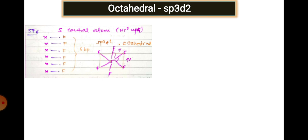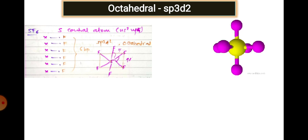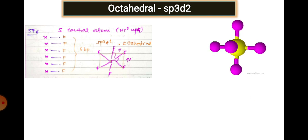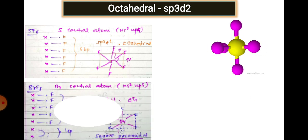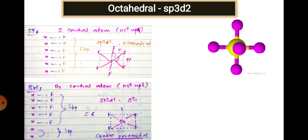For SF6 (sulfur hexafluoride), sulfur is the central atom with six valence electrons (ns2np6 — wait, six electrons shared with six fluorines: six bond pairs, zero lone pairs). Total = 6, so sp3d2 hybridization. The structure is a perfect octahedron with 90° bond angles, four atoms in a plane and two in axial positions.